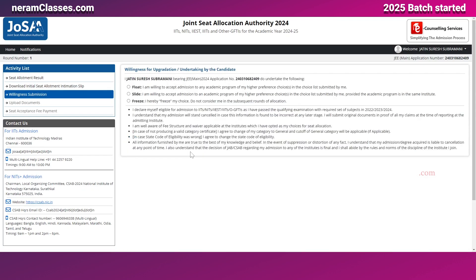The third option is the most important — the 'Willingness Submission' — that is, whether you are accepting the seat allocated in the first round or are willing to participate in future rounds. You have been provided with three options: Float, Slide, and Freeze. If you are happy with the first round seat allocation and ready to accept, you choose Freeze and proceed with fee payment.